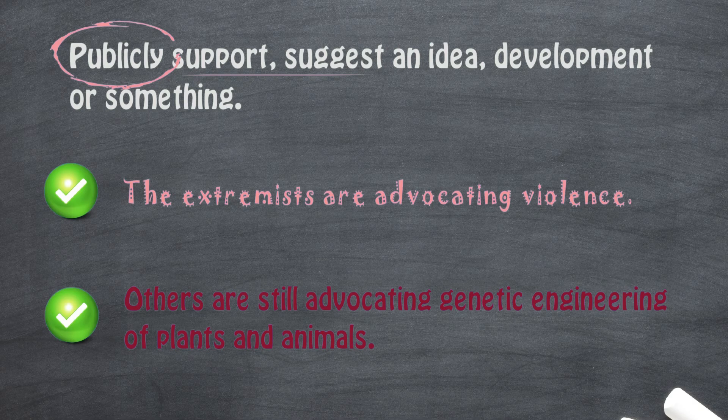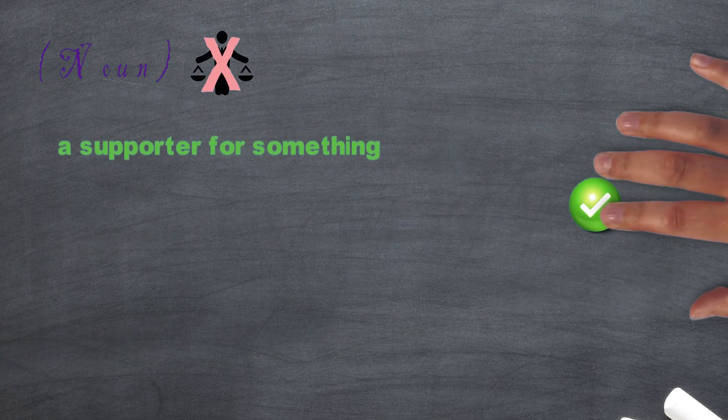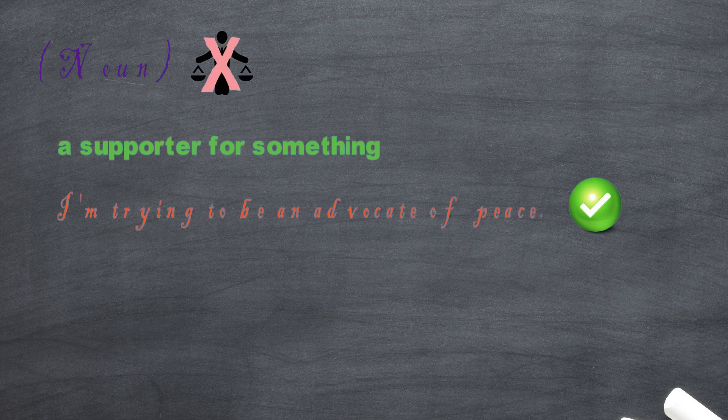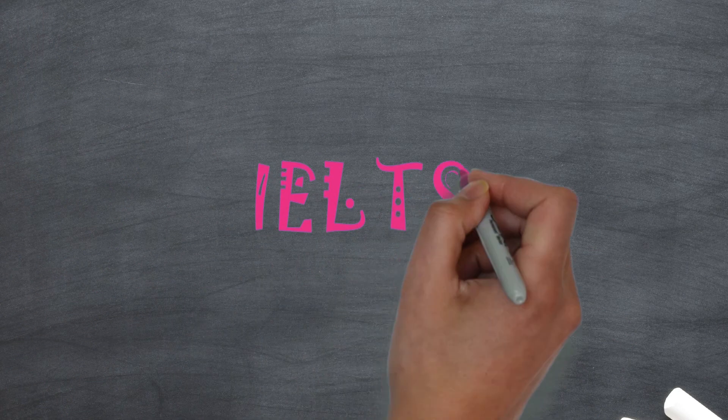Now, using advocate as a noun. I am trying to be an advocate of peace. Easy right? Advocate of something. Now, that is the pronunciation and the meaning of the word advocate.